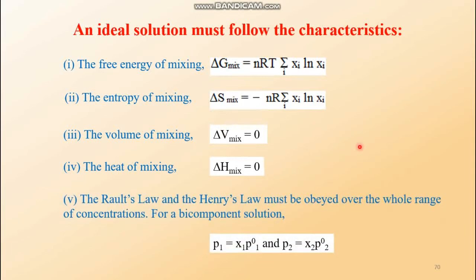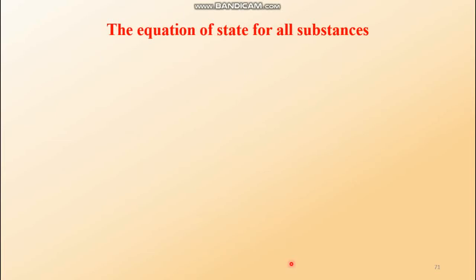Finally, Raoult's law and Henry's law must be obeyed over the whole range of concentrations. For a bi-component solution composed of A and B, the mathematical form of Raoult's law is: p1 = x1·p1° and p2 = x2·p2°. That covers ideal solutions.